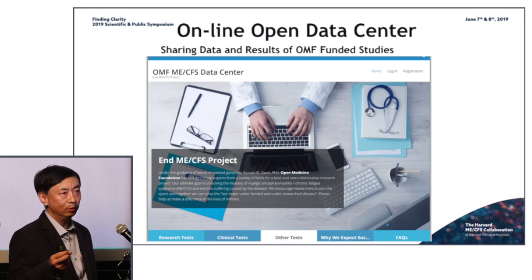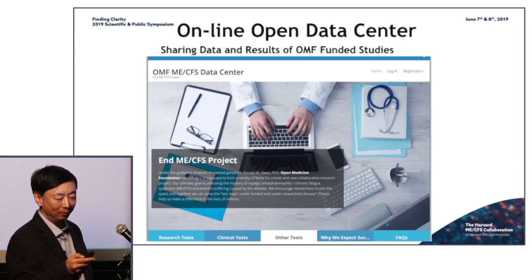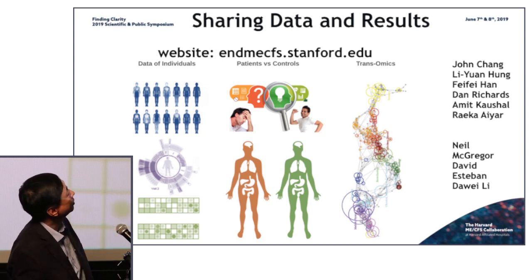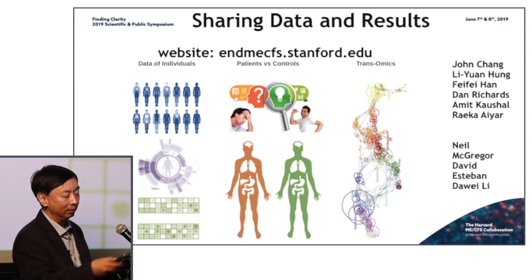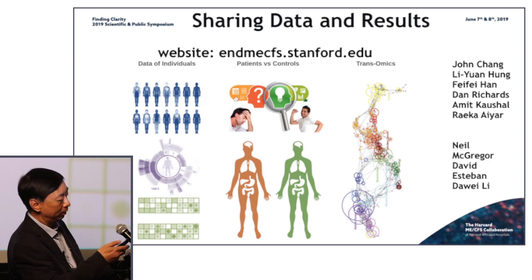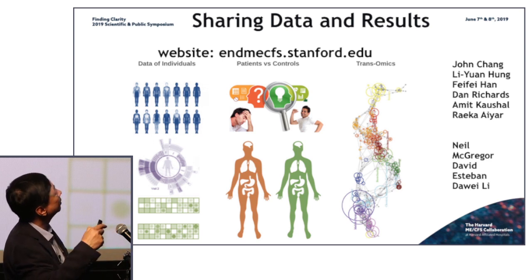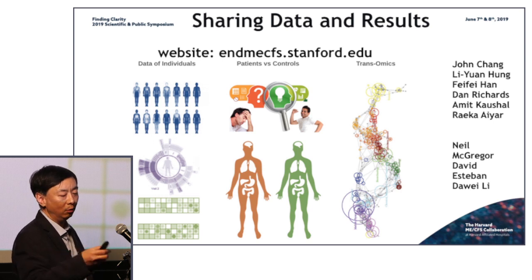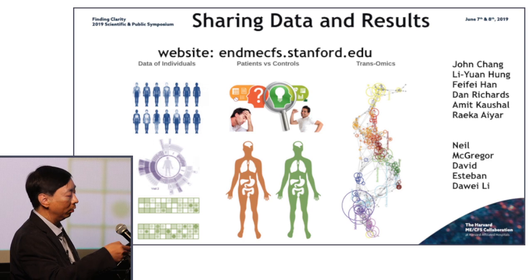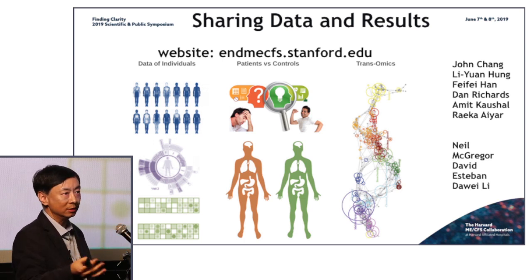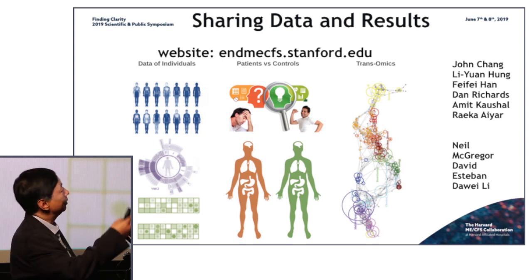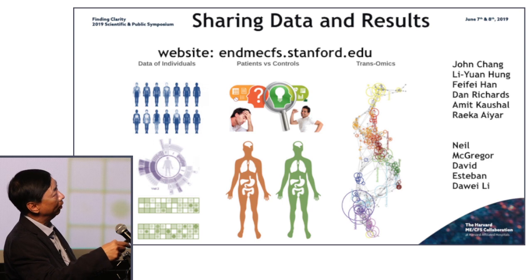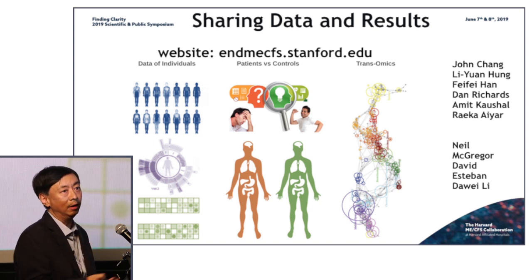Because of the time, I can only give you a couple of glimpses of what's on the website. This is the front end of the website — it's MECFS.stanford.edu. We'll have another mirror site on the Harvard domain soon. As you can see, each study is separated into different levels based on type: clinical information, clinical lab tests, or different types of molecular measurements — genes, proteins, metabolites, microbiome, et cetera. We compare patients as a group with controls, and those results are also available on the website.